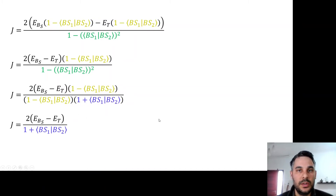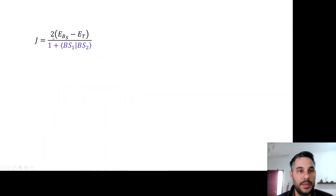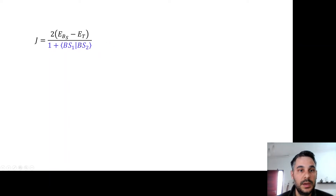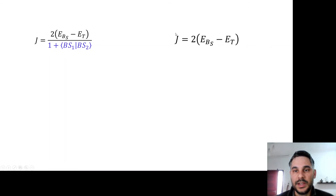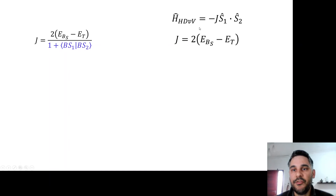This derivation was done allowing for the possibility of an overlap between the broken symmetry calculations — a more general derivation. In most cases, because of how the calculations are done, this overlap between the different wave functions is zero; the solutions are orthogonal to each other. So we get a simplified expression where the exchange coupling constant J is equal to two times the difference in energy between the broken symmetry and the triplet states.